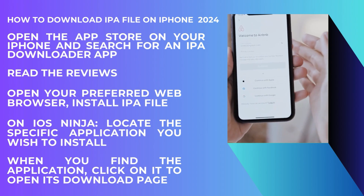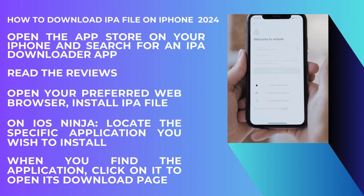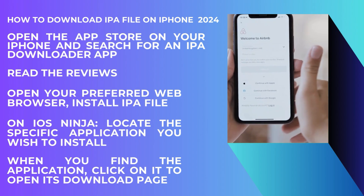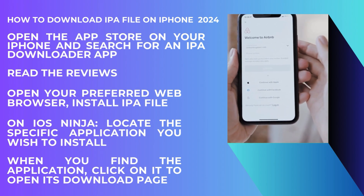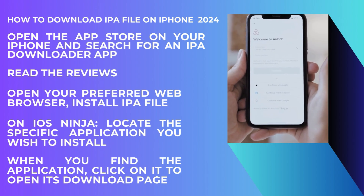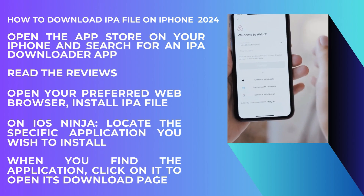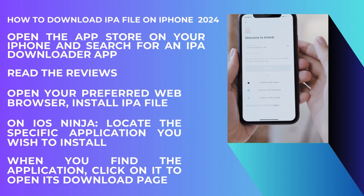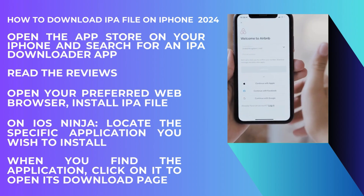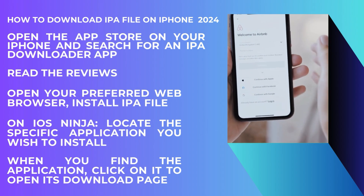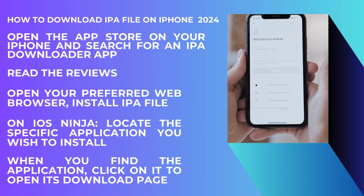Next, open your preferred web browser on your iPhone and type in the name of the IPA file you want to install. Typically, the first link that appears will be from a reputable site like iOS Ninja, which hosts a wide variety of IPA files for download. Once you are on the iOS Ninja page, you will need to locate the specific application you wish to install. This can usually be done by scrolling through the list of available applications or using the site's search function.